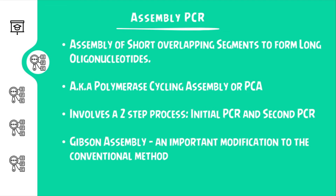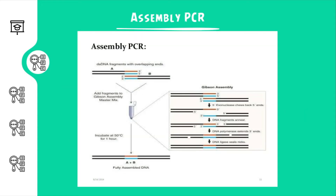It involves two steps. The first step involves a set of primers and the second PCR step involves primers which aid in elongation of the previously created copy. An important modification known as Gibson assembly is done instead of the conventional method. Here, T5-exonuclease is used so as to chew back the complementary ends which creates a 40 base pair overlap. As the reaction takes place at around 50 degrees Celsius, T5-exonuclease after its action is degraded. Then fusion polymerase and intact DNA ligase is used to ligate the overlaps of the two strands forming a final long strand.